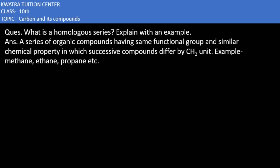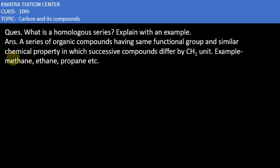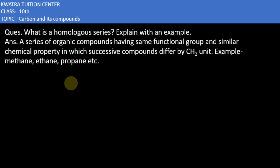The question is: what is a homologous series? It is a series of organic compounds having the same functional group and similar chemical properties, in which successive compounds differ by a CH2 unit. For example: methane, ethane, propane.